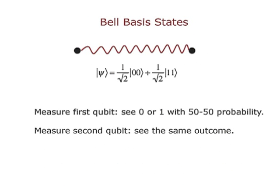By saying that Alice and Bob share entanglement, here's what I mean. The canonical entangled state of two qubits is this maximally entangled Bell basis state — your two qubits are in superposition of |00⟩ and |11⟩ with equal amplitudes. This state has the property that if you measure the first qubit, you see 0 or 1 with equal probability. The fact that they are in this entangled state has nothing to do with the proximity of the qubits — they could be very far apart and still be entangled.